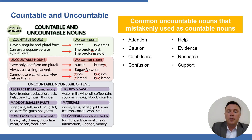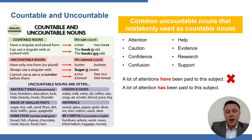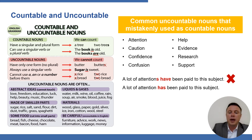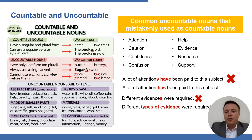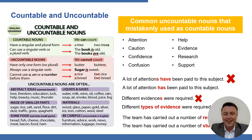Other common uncountable nouns mistakenly used as countable include: attention, help, caution, evidence, confidence, research, confusion, and support. Be careful — it's not 'a lot of attentions have been paid,' it's 'a lot of attention.' No matter how many pieces of evidence there are, it is always just 'evidence' — not 'different evidences.' This is a really common mistake.